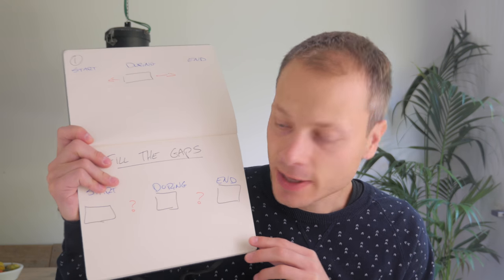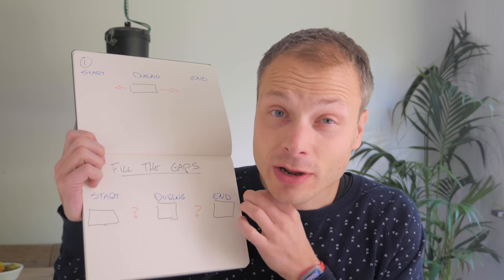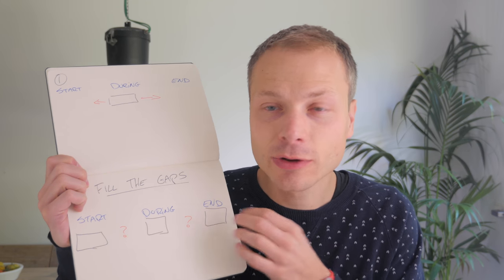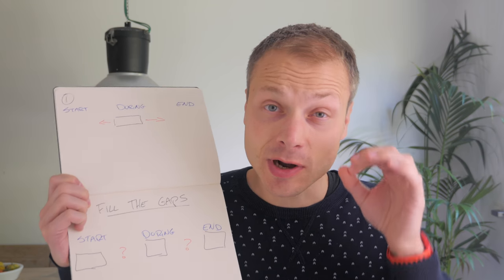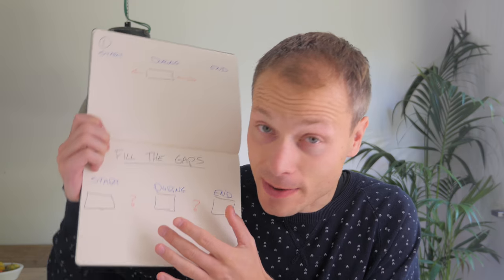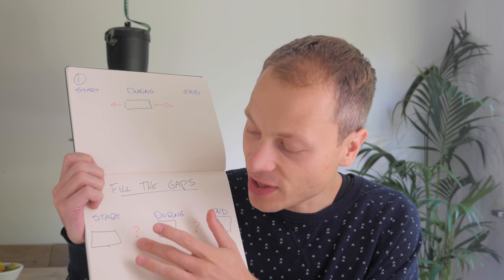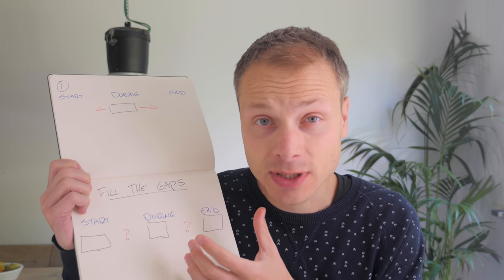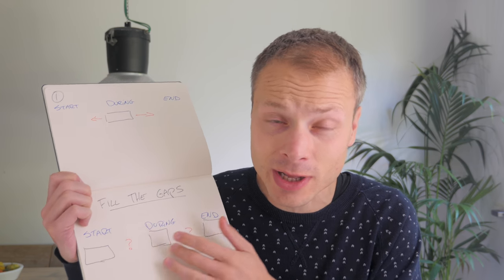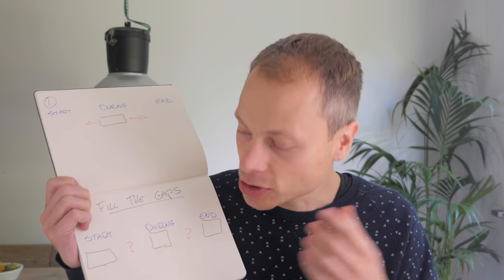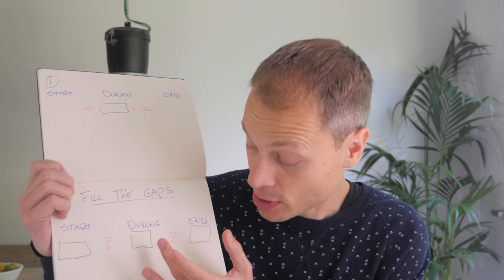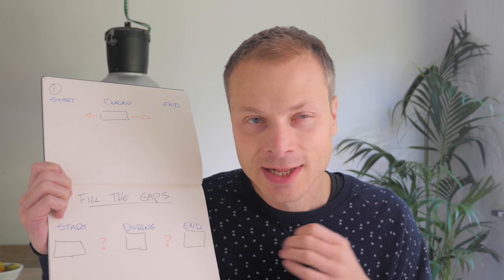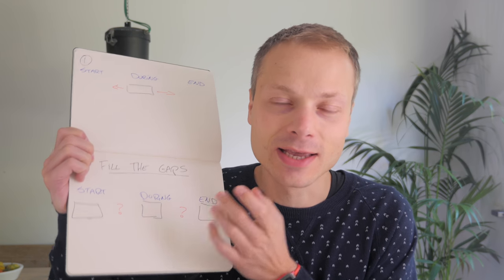The second approach is similar to the first, but a little different. You define three moments: the during moment, an end moment, and a start moment. It doesn't really matter what those moments are at first — just pick those three and then start filling in the gaps in between. In a workshop, I would ask: what are three interactions or touch points between the start and the during phase? And what are three touch points between the during and the end phase?